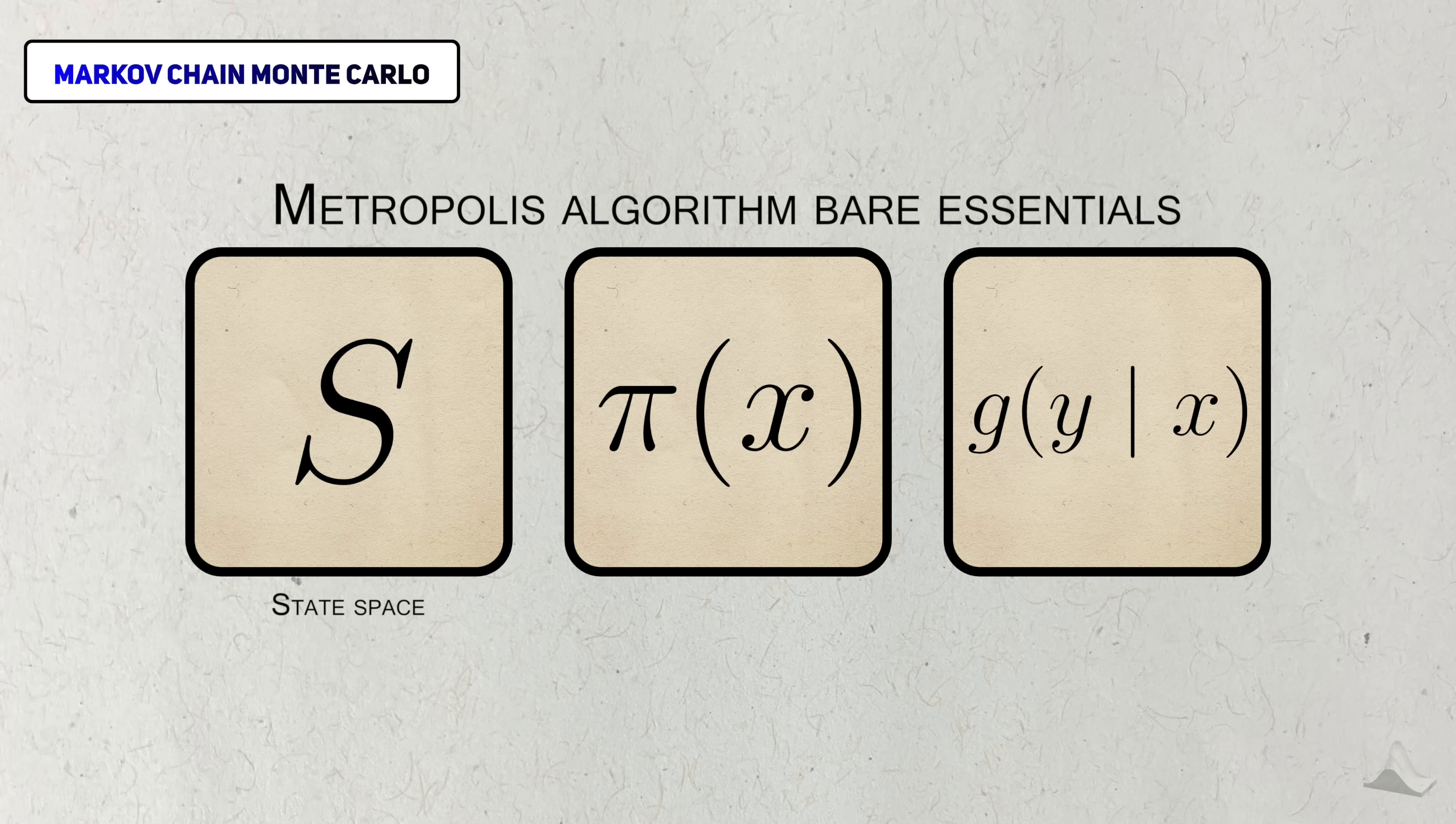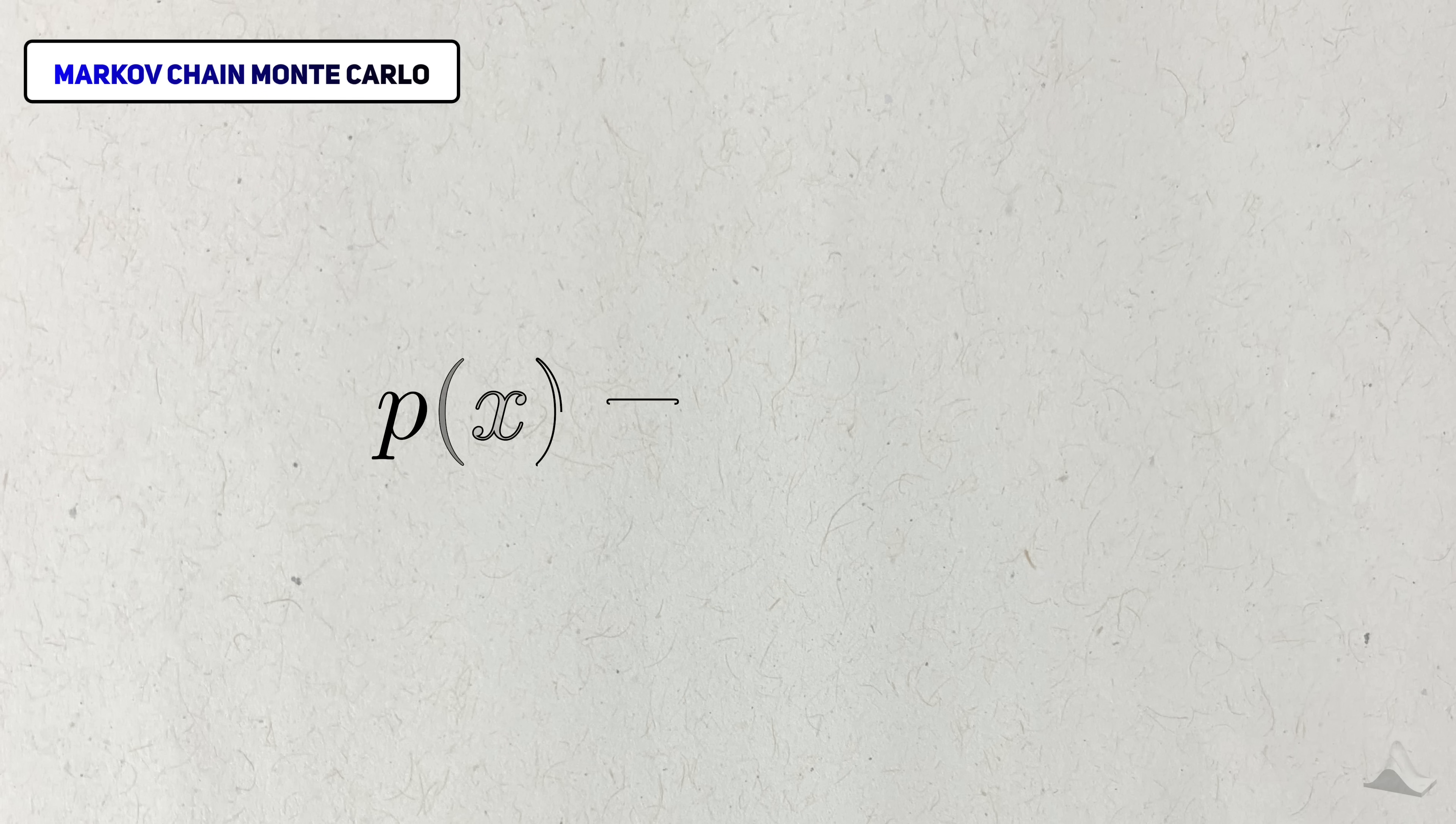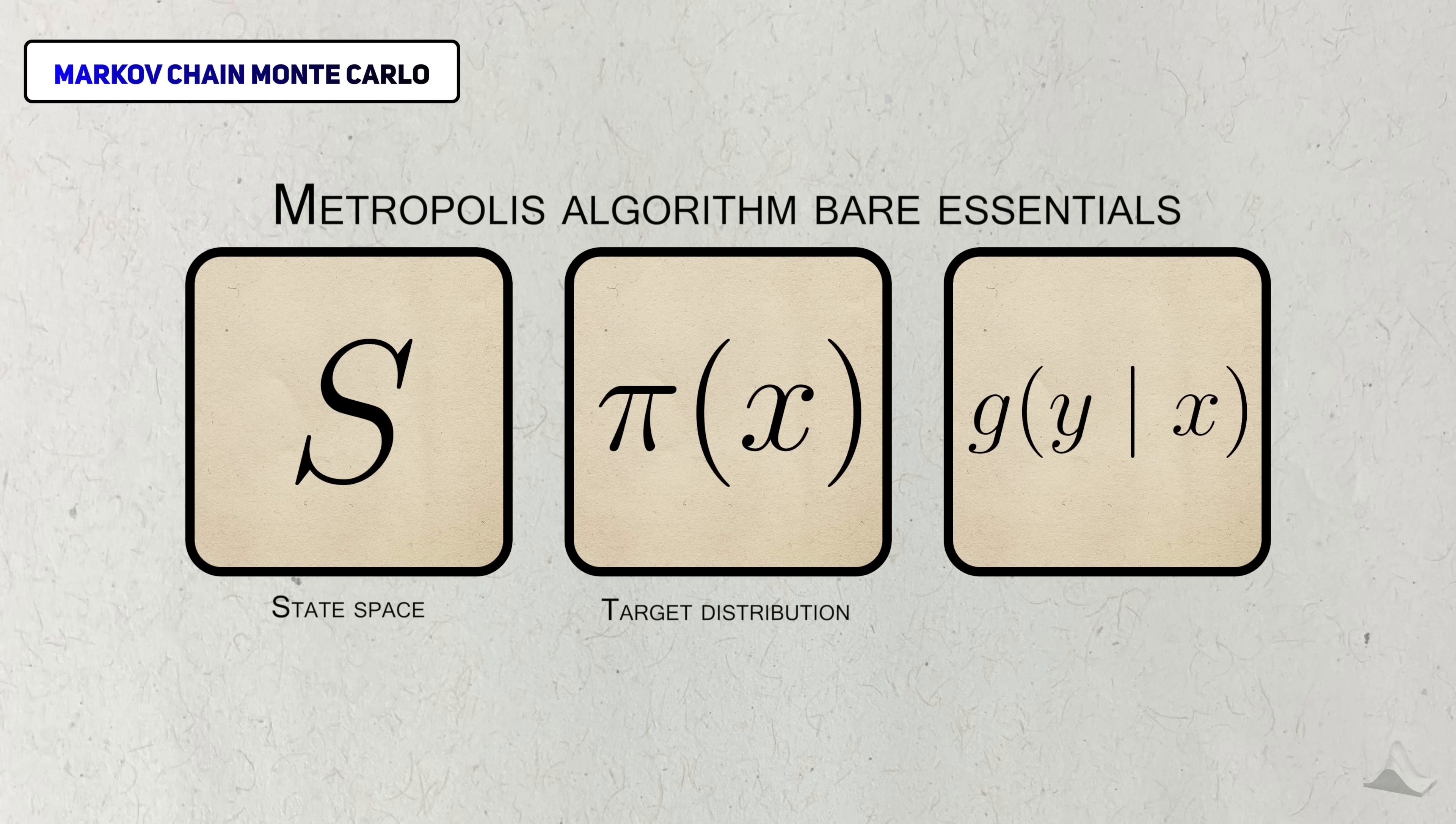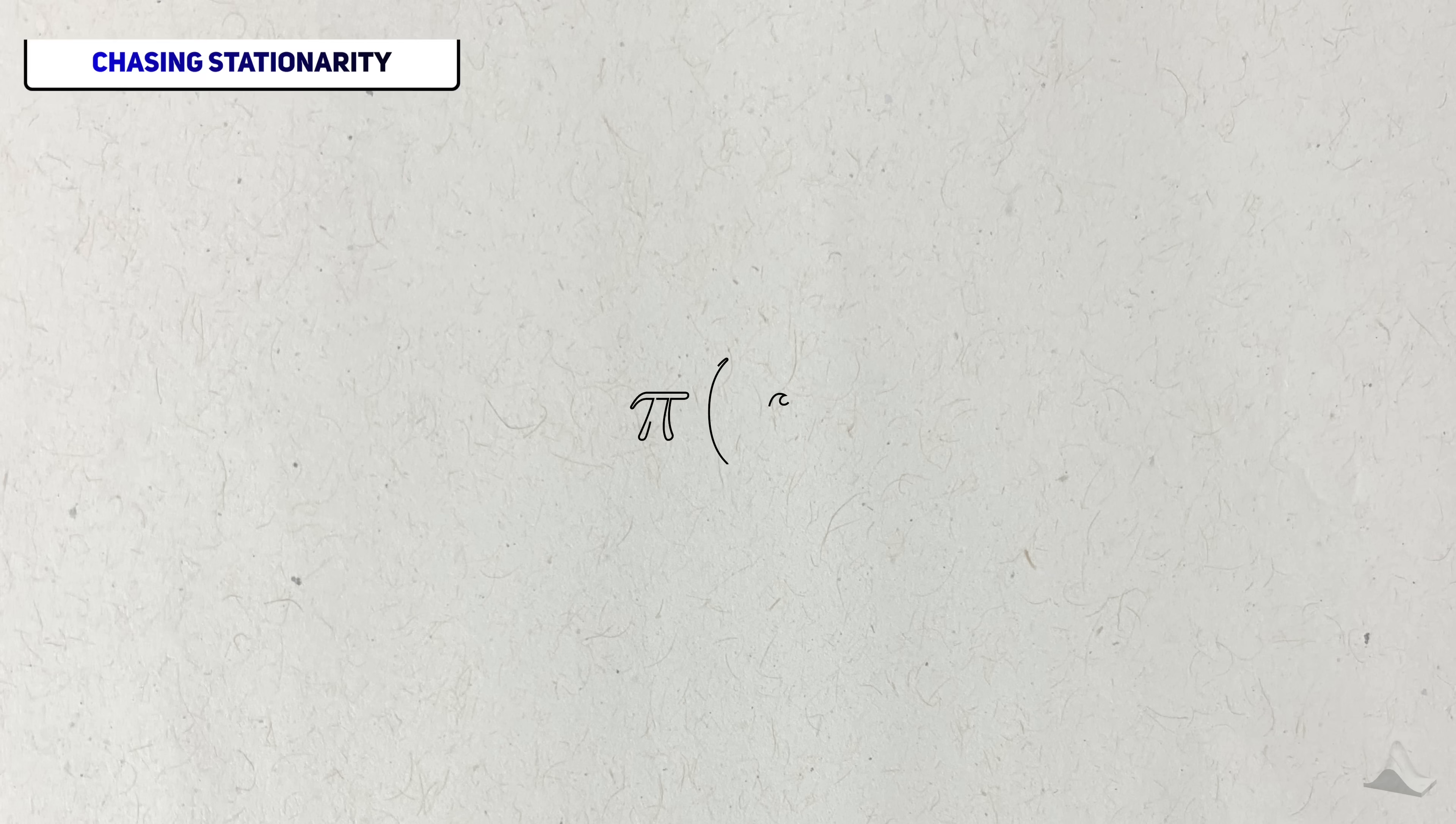Instead, we start with a state space and a known stationary distribution, which we'll refer to as the target distribution. This distribution doesn't need to be simple like the normal or binomial. As long as it has this particular form, it's fair game for Metropolis. Since we have a probability distribution, the corresponding state space is the support for this distribution. What we need to figure out is a transition distribution that will let us do this. Easier said than done, but as I'll show you, there's a clear logic to it.